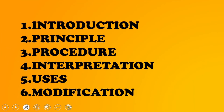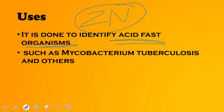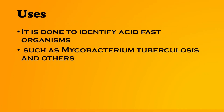The main uses of the ZN stain are to identify acid-fast organisms. When talking about the ZN stain, never forget to mention Mycobacterium tuberculosis — this procedure is mainly used for the identification of Mycobacterium tuberculosis, although other organisms can also be identified.